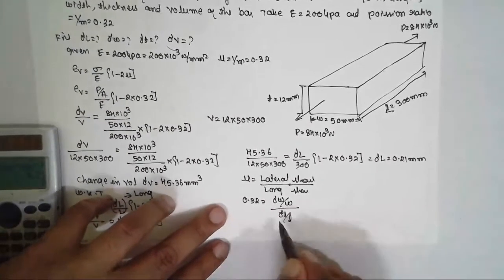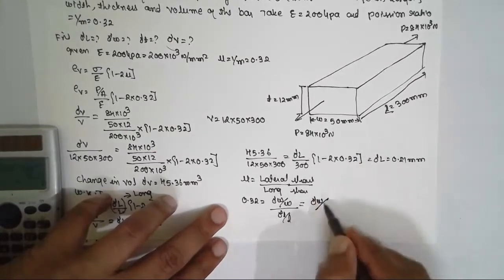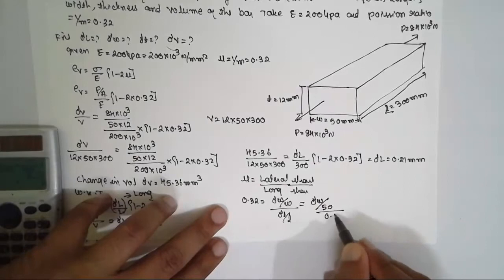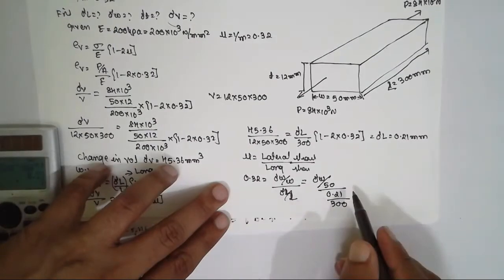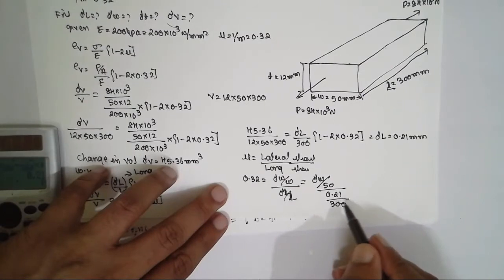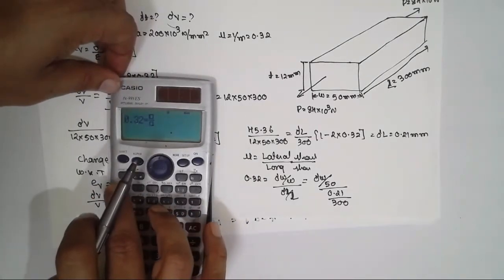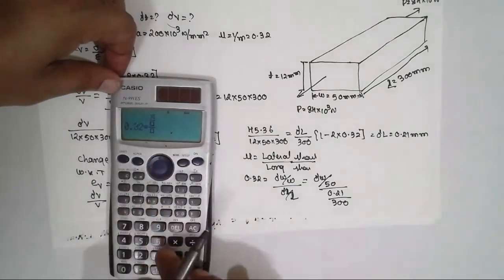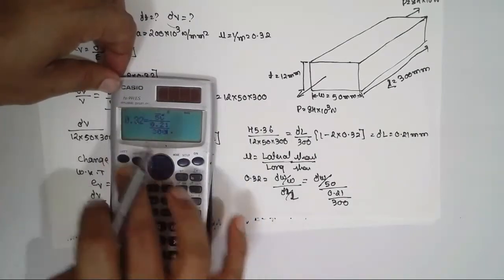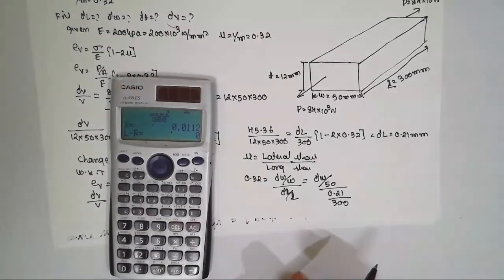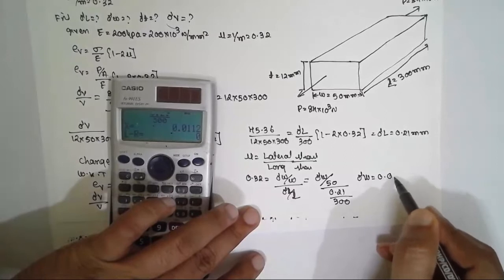0.32 = (ΔW/W) / (ΔL/L). Substituting: ΔW / 50 = 0.32 × (0.21 / 300). Solving with the calculator, ΔW = 0.012 mm.